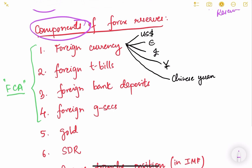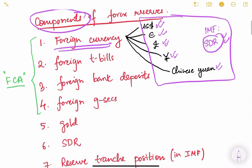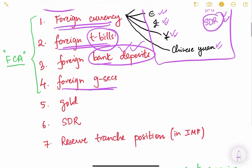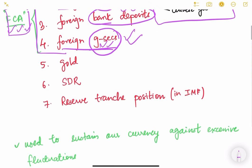The first component is foreign currency — international currencies kept such as the US dollar, euro, pound, yen, and Chinese yuan. These are also the currencies used by the IMF to calculate the value of SDR. Then there are foreign treasury bills issued by foreign governments, foreign bank deposits, and foreign government securities. Together these four components are called Foreign Currency Assets (FCA).